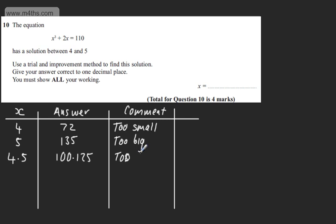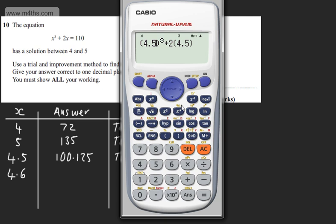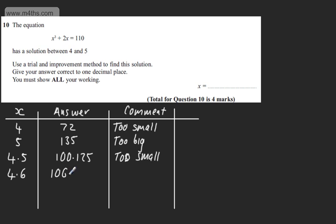So we know that our answer now is going to be somewhere between 4.5 and 5. So let's try the logical thing of 4.6. So in the calculator, I'm simply switching this over and going from there. So 4.6 is going to give us 106.536. So 106.536. So we can say this is still too small.